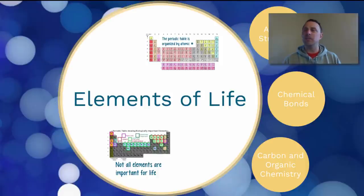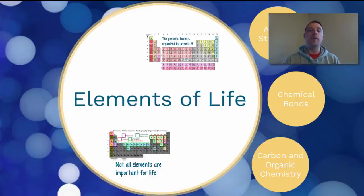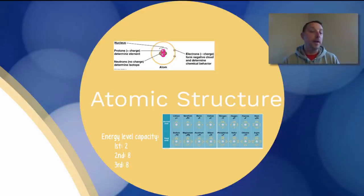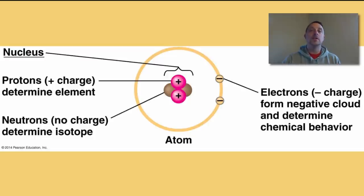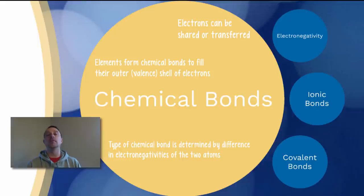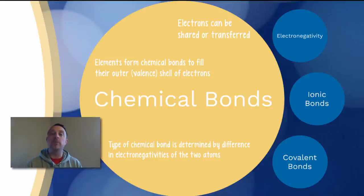Introductory chemistry — I don't think we're going to see a whole lot of this on this year's test, but it's a good place to start. Remember that the elements are organized by the periodic table. As far as atomic structure, in the center of the atom we have the protons and neutrons, and orbiting around the outside we have the electrons. The electrons are what give the element its chemical properties. One big thing we'll focus on for the AP test is what type of chemical bonds we might see in our biological molecules, and these chemical bonds are formed by atoms and their electrons.